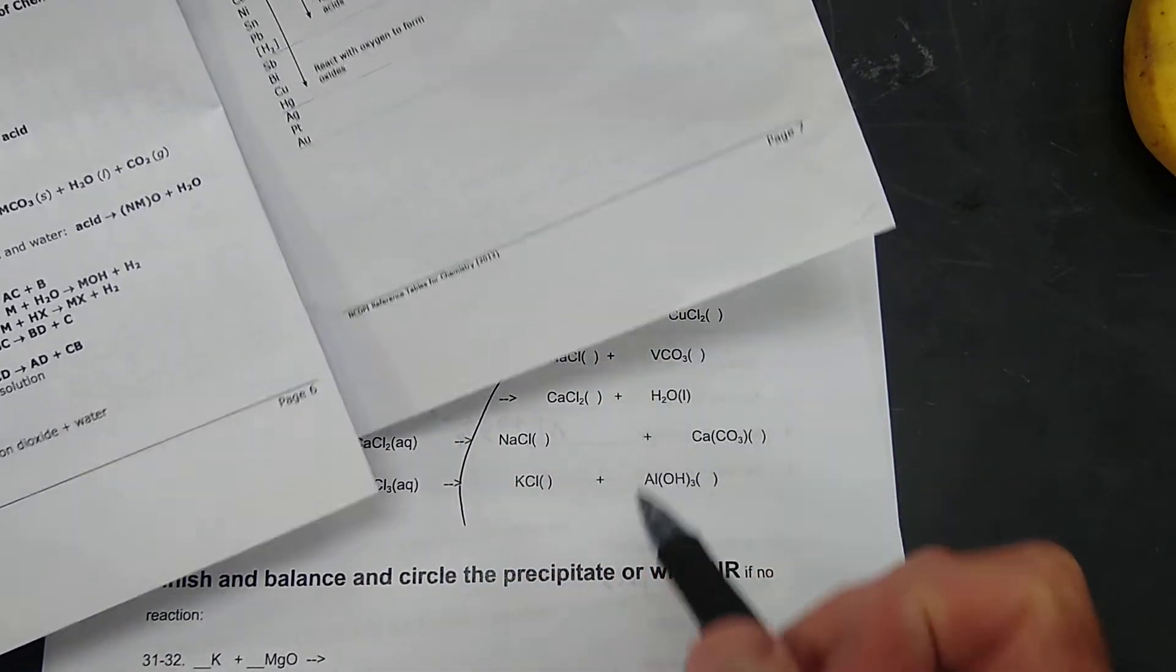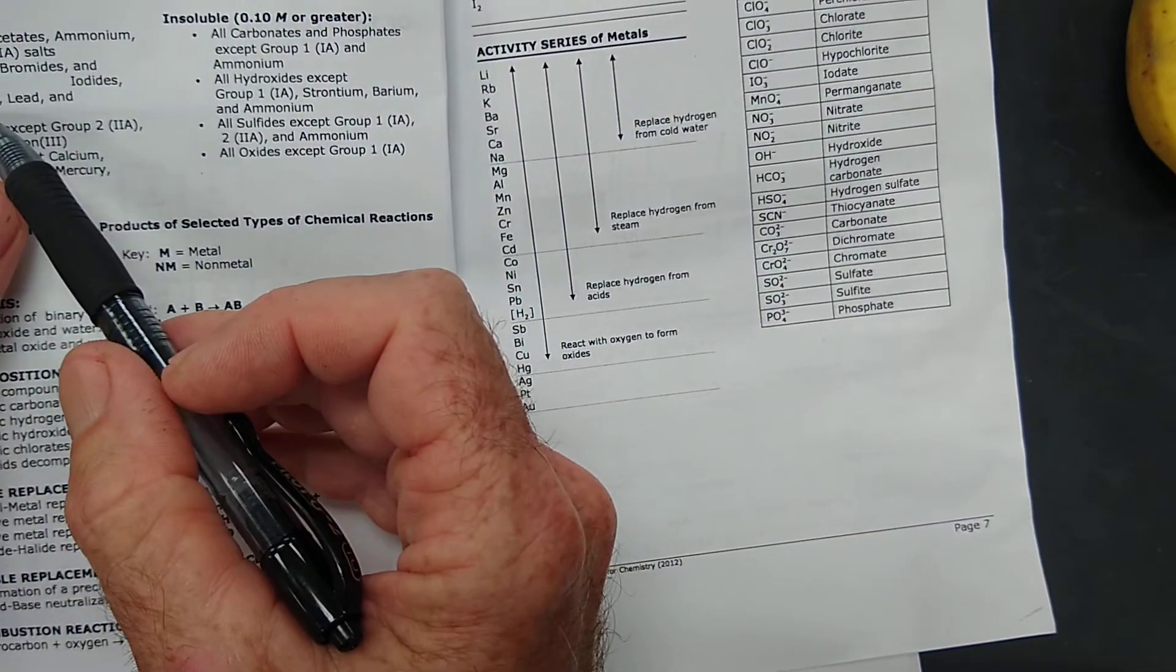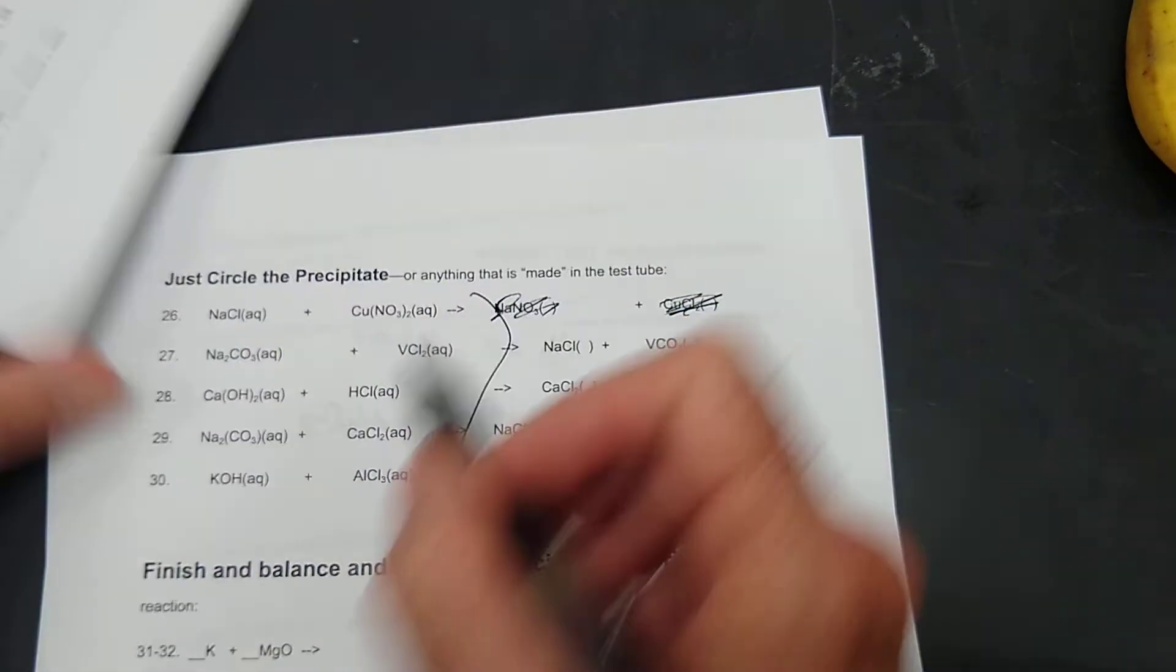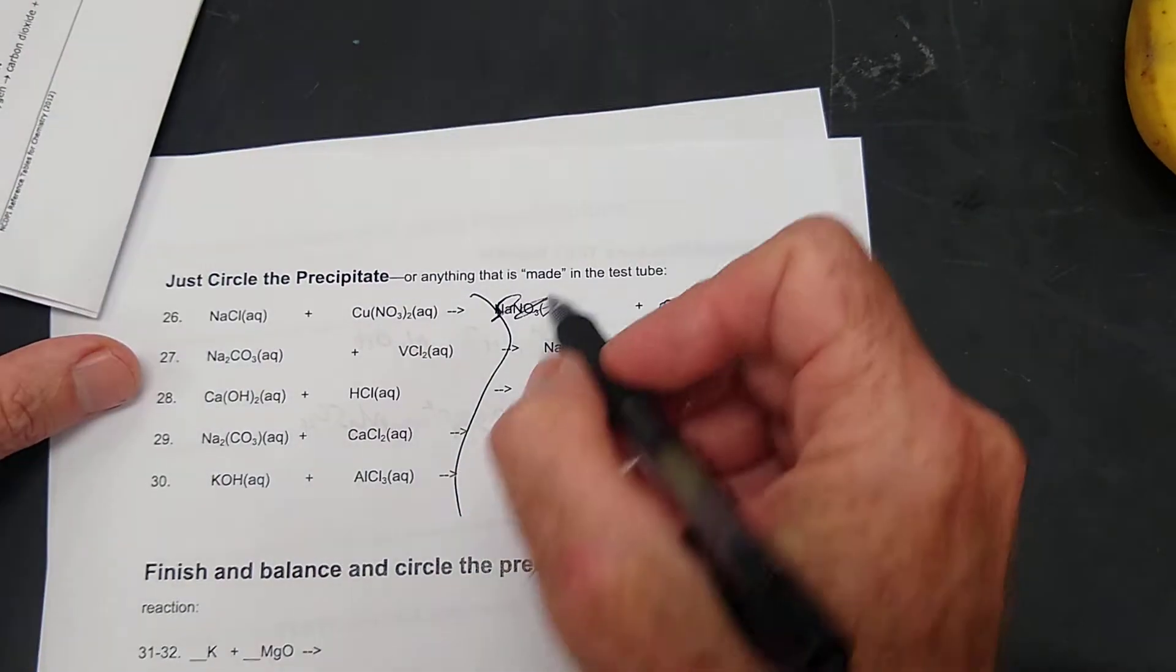Copper two chloride. All chlorides except lead and mercury. That's not an exception. So there's no precipitants in the first one. That would really just be no reaction.